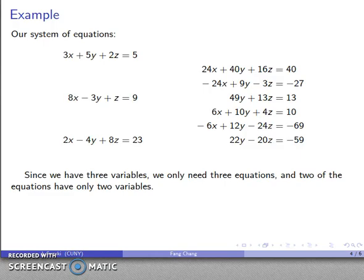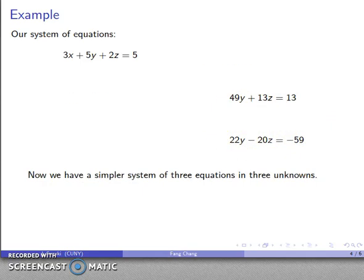Now, I have three variables, so I actually only need three equations, and since two of the equations only have two variables, this one and this one, I'm going to keep those as being somewhat simpler. And so I'll keep my 1st equation, which I haven't changed at all. My 2nd equation, I'll pick this one, and my 3rd equation, I'll pick this one, and I don't need the others.